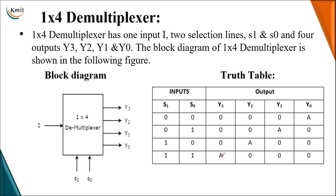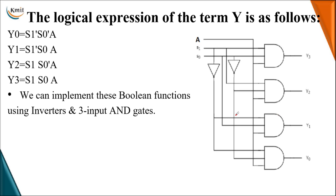The data input can be represented with the letter I or A. This data input value might be 0 or 1 — everything in digital circuits is represented with 0 and 1. We have not specified the value of the data input as 0 or 1, so we generally represent it as input I or input A. The value of A may be 0 or 1 depending on what input is transferred to the output.